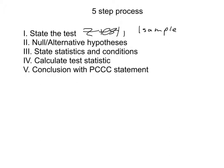And then the second step is you're going to state your null and alternative hypotheses. So this is your H₀ and your Hₐ. Remember H₀ is always equal to something, and Hₐ is less than, greater than, or not equal to.